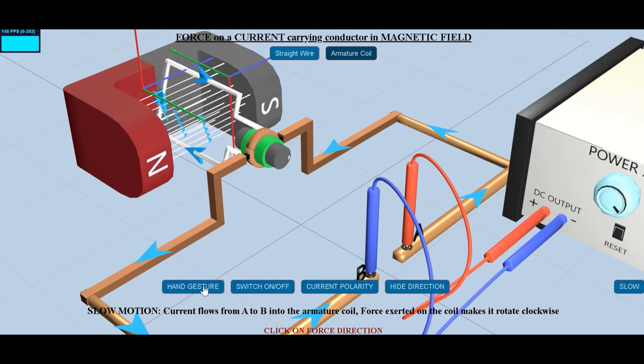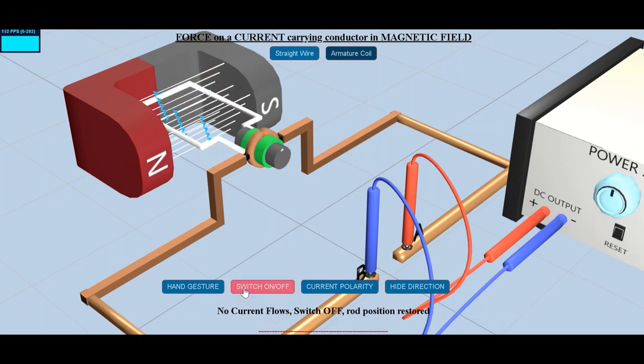When the coil reaches the vertical position, the split ring helps to reverse the current in the coil.